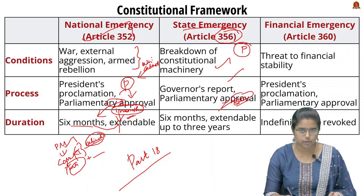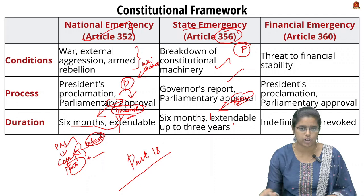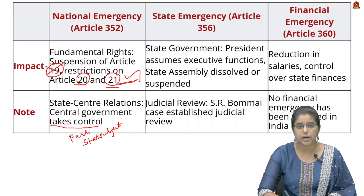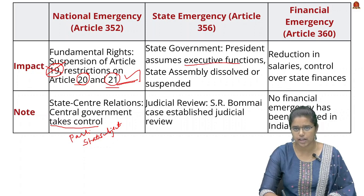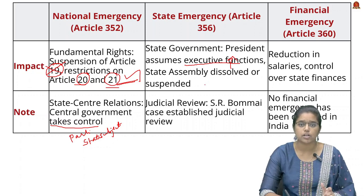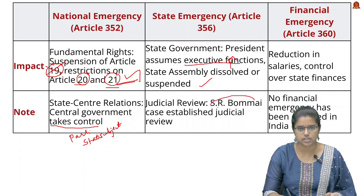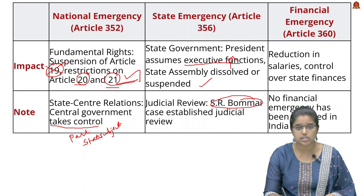In case of National Emergency the approval period was one month, but for State Emergency it is two months. The State Emergency can be extended to six months and, in special circumstances, up to three years with further Parliamentary approval. During President's Rule, executive functions of the state are taken over by the President and the state assembly is dissolved or suspended. The SR Bommai case held that declaration of State Emergency is subject to judicial review by the Supreme Court.